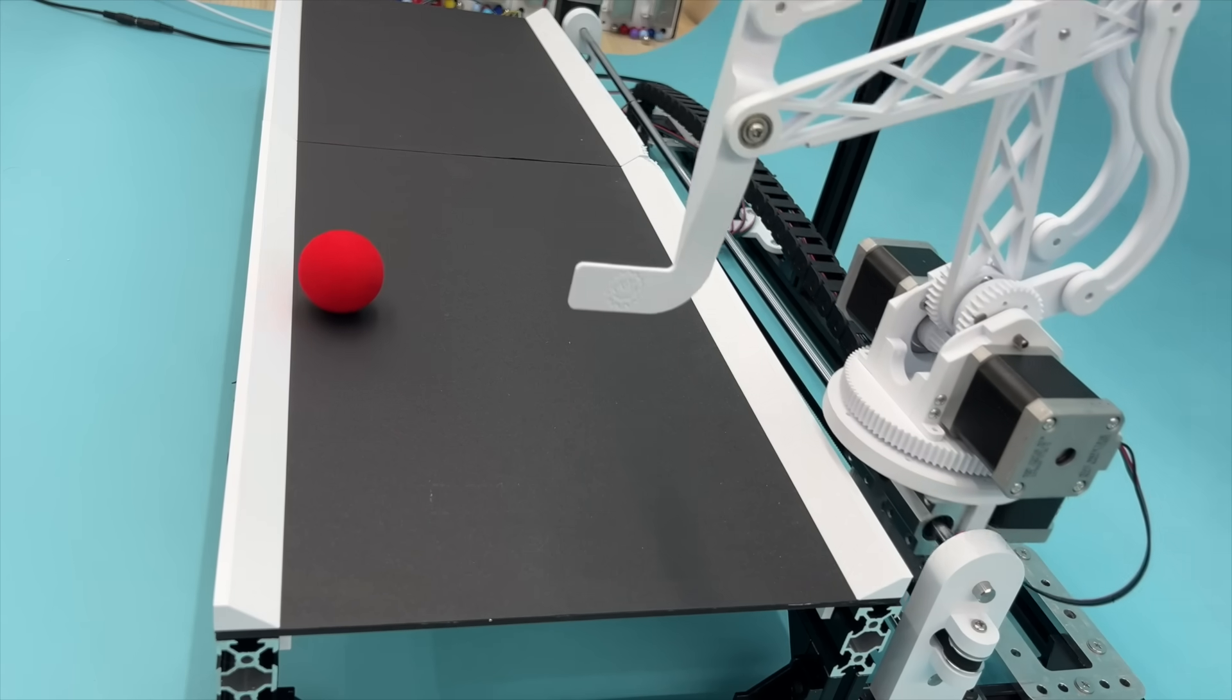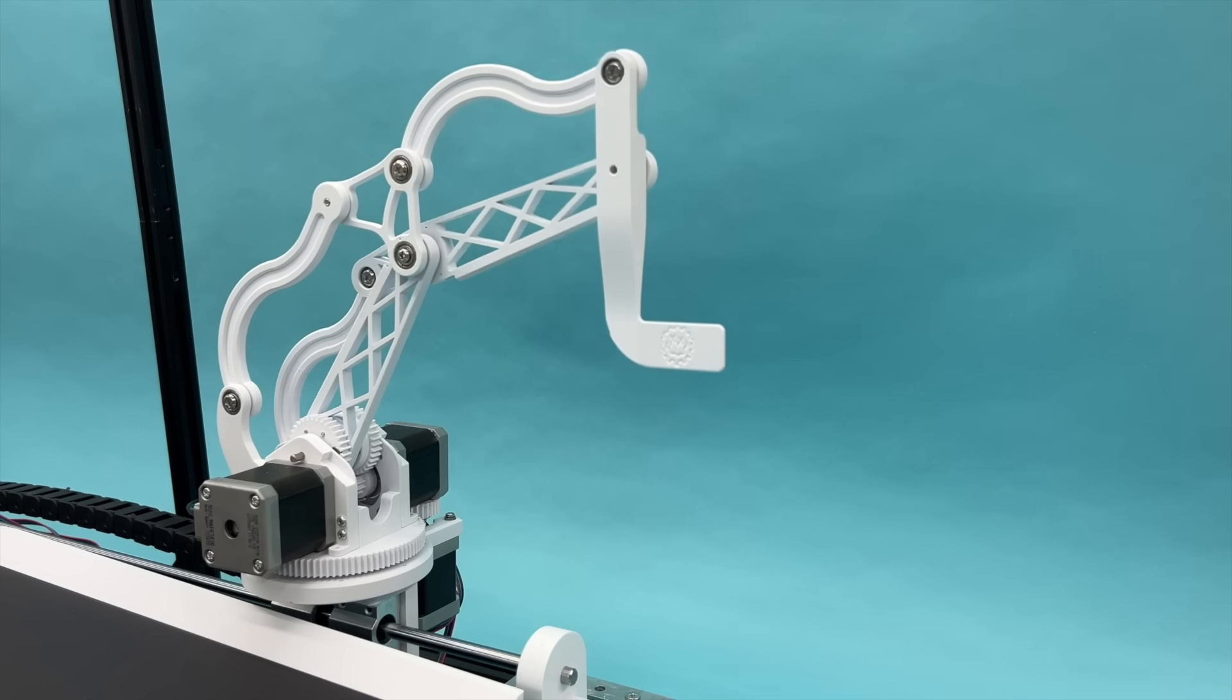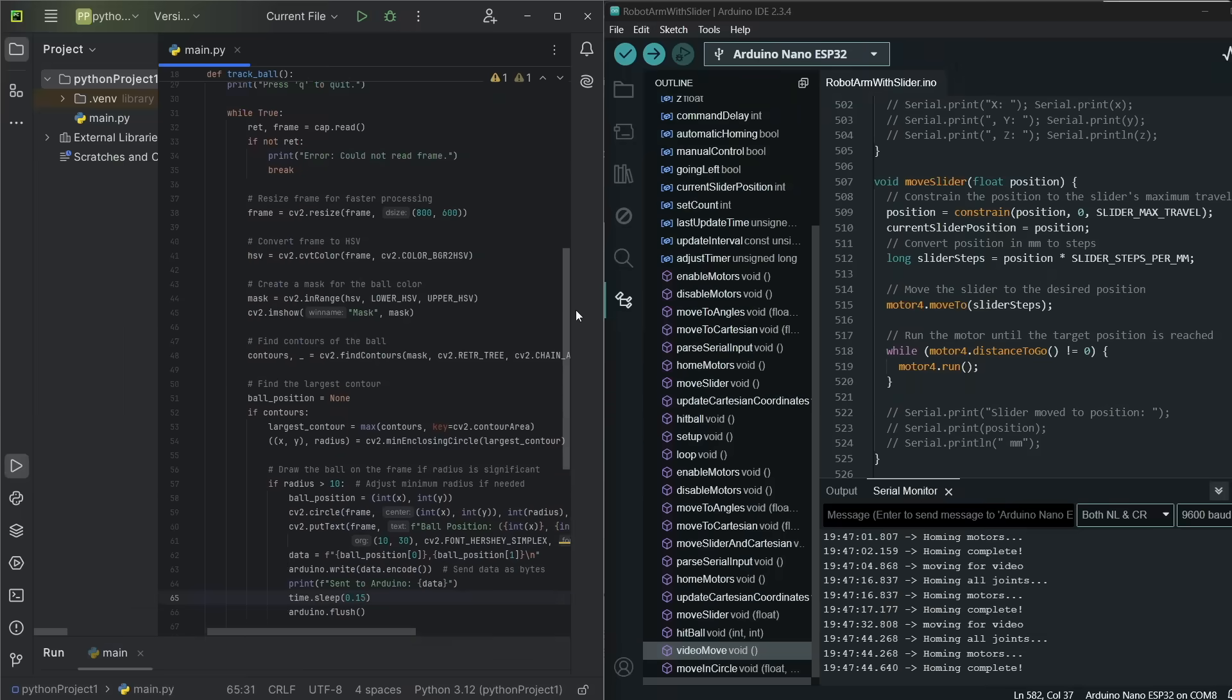Finally, coming in at number one, we have this robot arm that plays with itself, plays ball with itself. This is number one because it requires the entire mechatronic skill set, mechanical design, electronics, and coding.